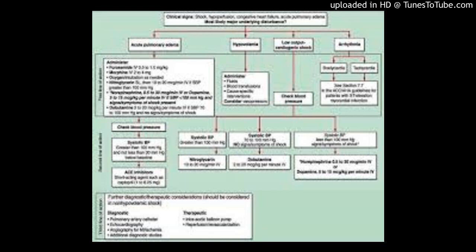Asbestos bodies look like a long rod-shaped particle with little brown beads on it — those brown beads represent iron depositing on the rod. This is also called a ferruginous body. That's the pathologic way by which we can confirm that a patient was exposed to asbestos. Those are the four pneumoconioses and I've told you the highest yield points for each.